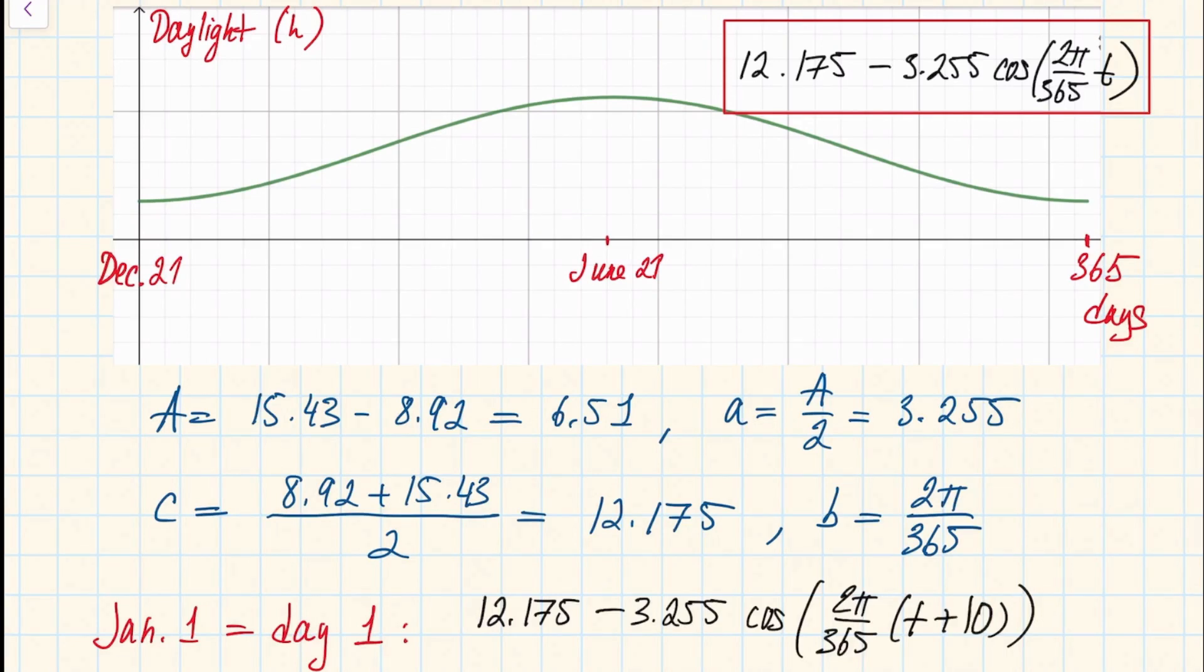Okay, so this will be the formula for this function if you want January 1st to be t equals to one, because if you want January 1st to be day one, you want to plug in one here and by adding 10 you're actually plugging in 11. In the previous representation, 11 exactly corresponded to January 1st. So now you can take any day of the year, plug into this function and then compare its output with the actual data which you can easily find online, and this should give you an excellent approximation.